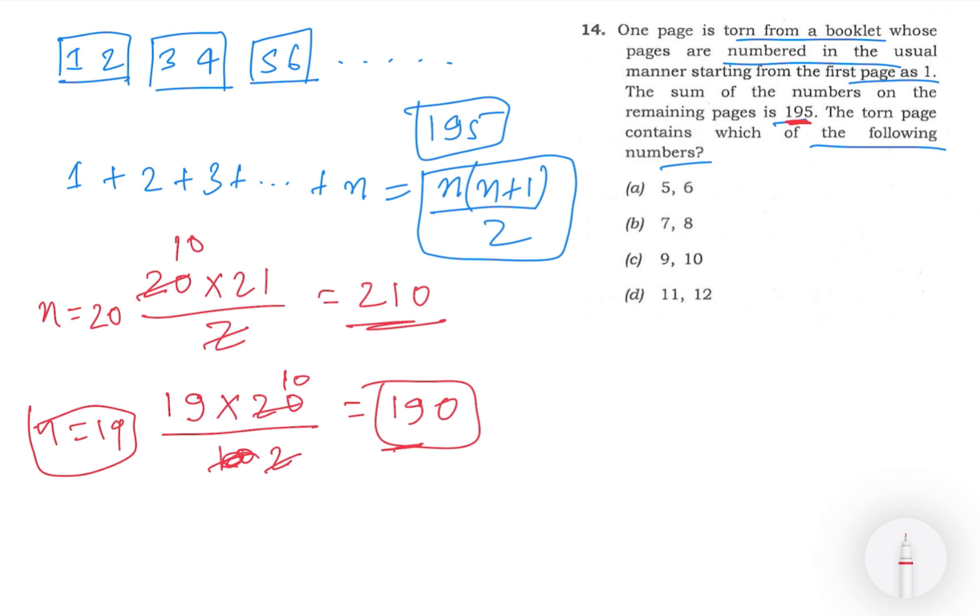And our sum is 195. This means that the value of n will not be 19.